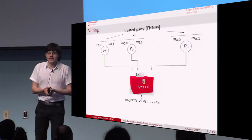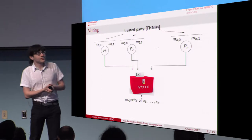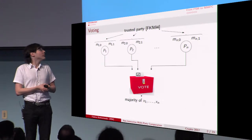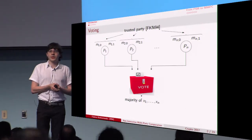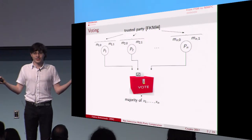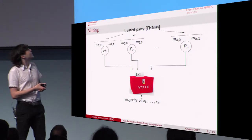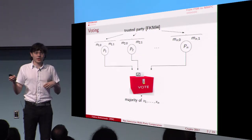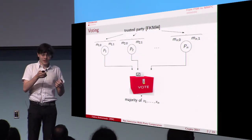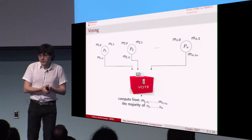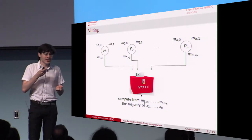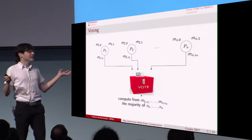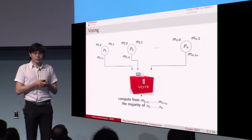To elaborate on this setting: you need a trusted setup. We suppose we have a trusted party which generates correlated randomness for all the parties. More precisely, the trusted party gives to each party pi two messages — mi0 and mi1 — corresponding to the two possible input bits. The protocol then consists of each party pi sending the message corresponding to its input xi, namely the message mi_xi. From all these messages the evaluator should be able to compute the majority of the bits.